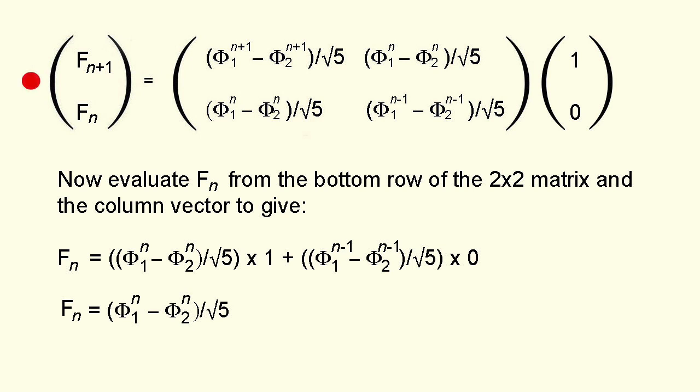All that's left to do is obtain f n by multiplying the bottom row of the 2 by 2 matrix by the column vector 1 0 to get this. And since the second term drops out because it's equal to 0 we're left with what we're looking for. Binet's formula.